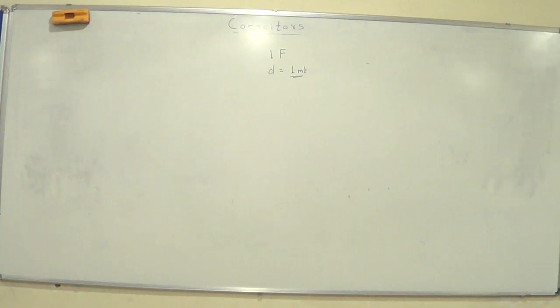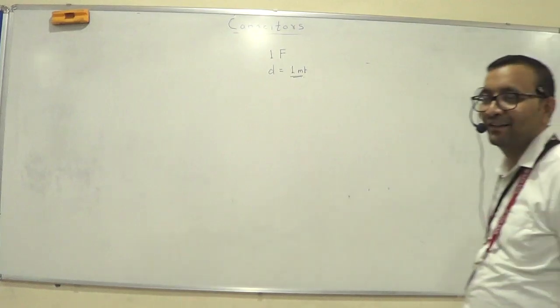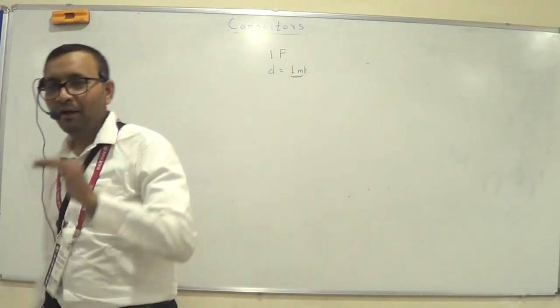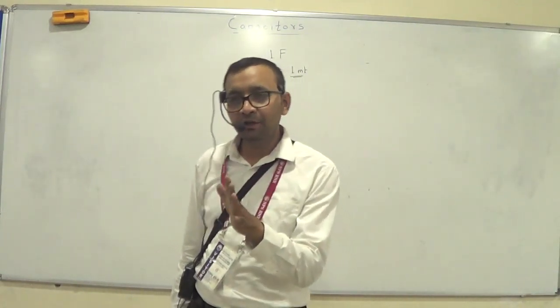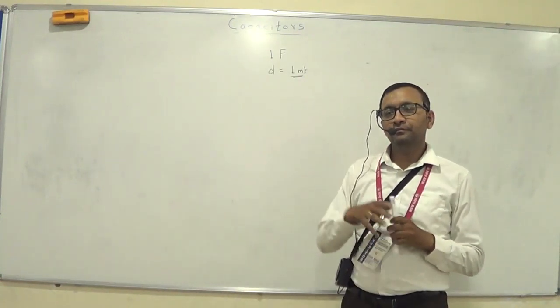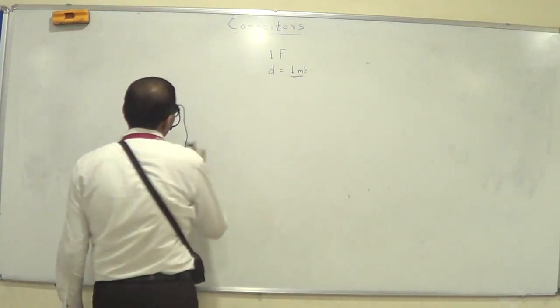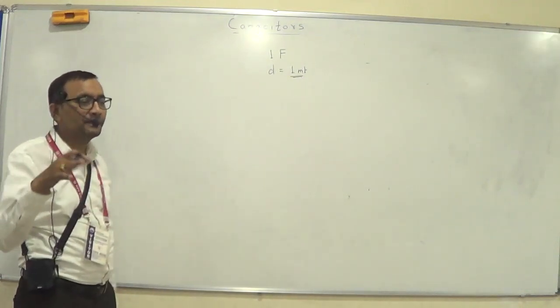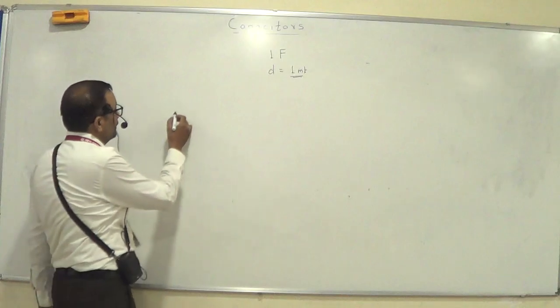1 by epsilon not. How much? Epsilon not is 1 by 8... 1 by 4 pi epsilon not is 9 into 10 to the 9. So 1 by epsilon not is what? 8.9 into 10 to the 9 minus... No, no. Don't worry about epsilon not. 1 by epsilon not is easier to find.